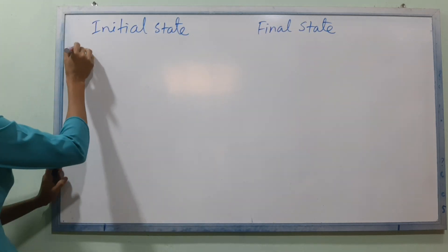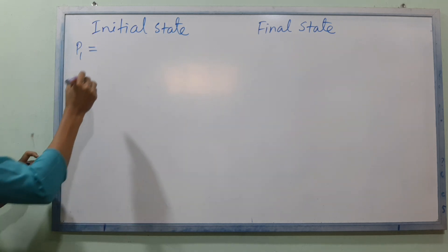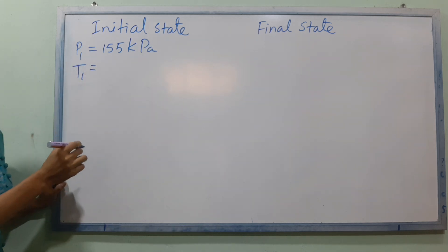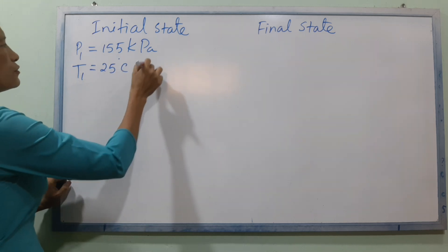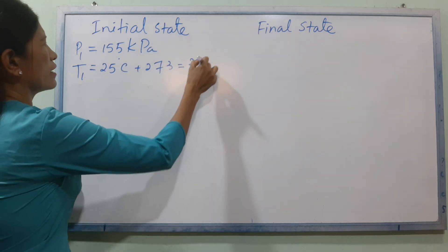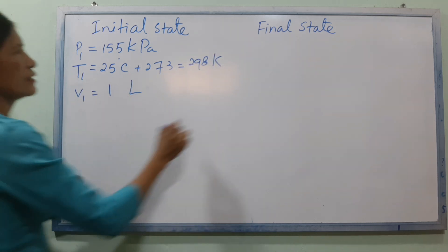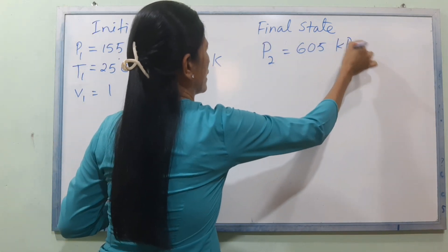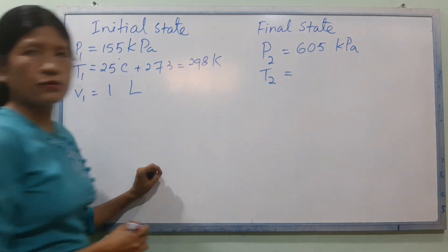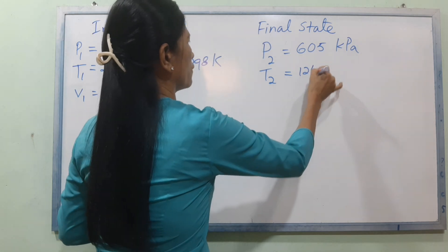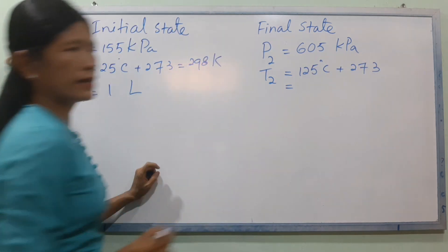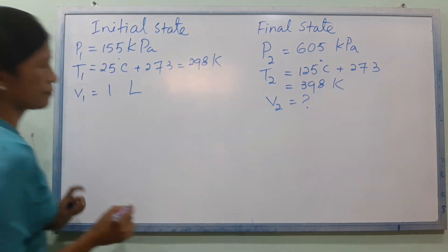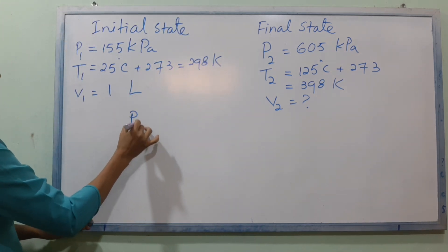The initial volume V1 is 1 liter. Converting temperature: 25 degrees Celsius plus 273 gives 298 Kelvin. The final pressure P2 is 605 kPa. Converting 125 degrees Celsius plus 273 gives 398 Kelvin.